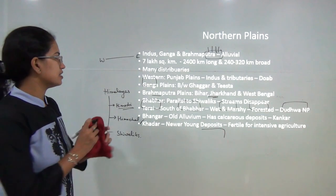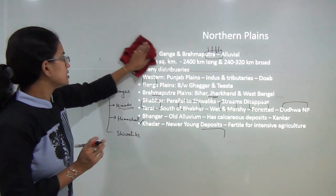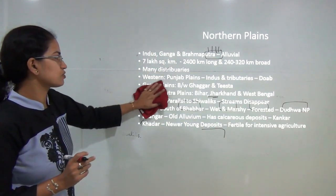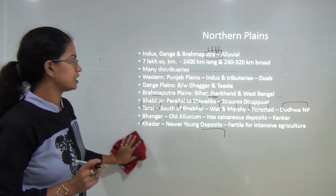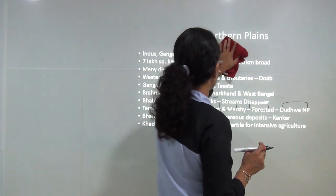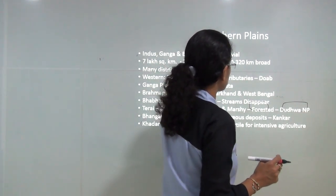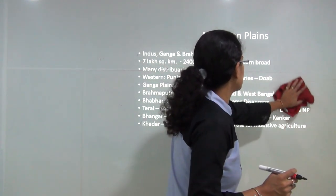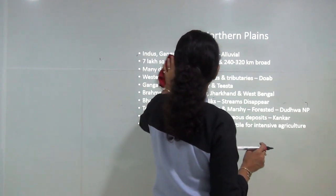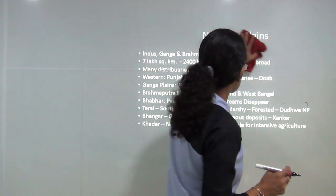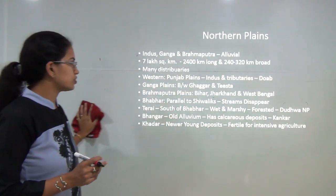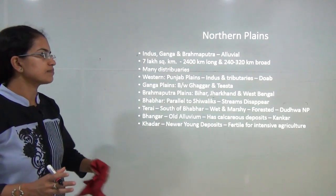The next physiographic division is the northern plains. These plains account for around 7 lakh square kilometers of area — 2,400 kilometers long and nearly 250 to 300 kilometers broad. They are drained mainly by three rivers: the Indus, Ganga, and Brahmaputra, and are composed of alluvial soils with many distributaries.